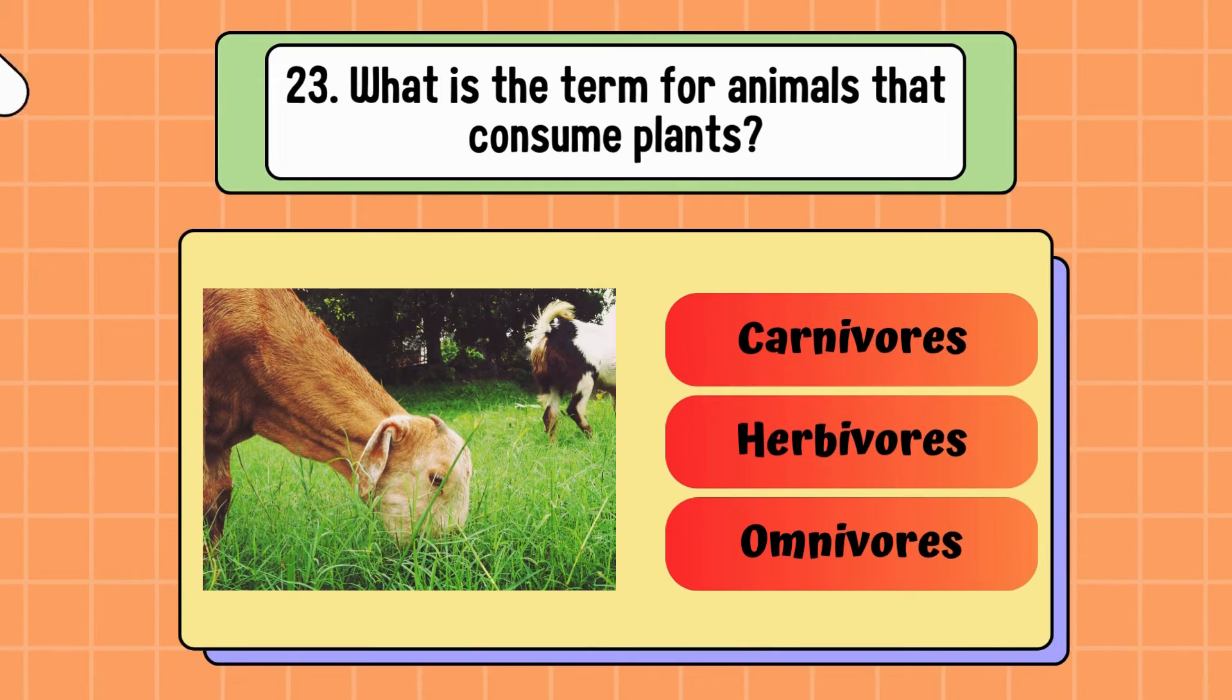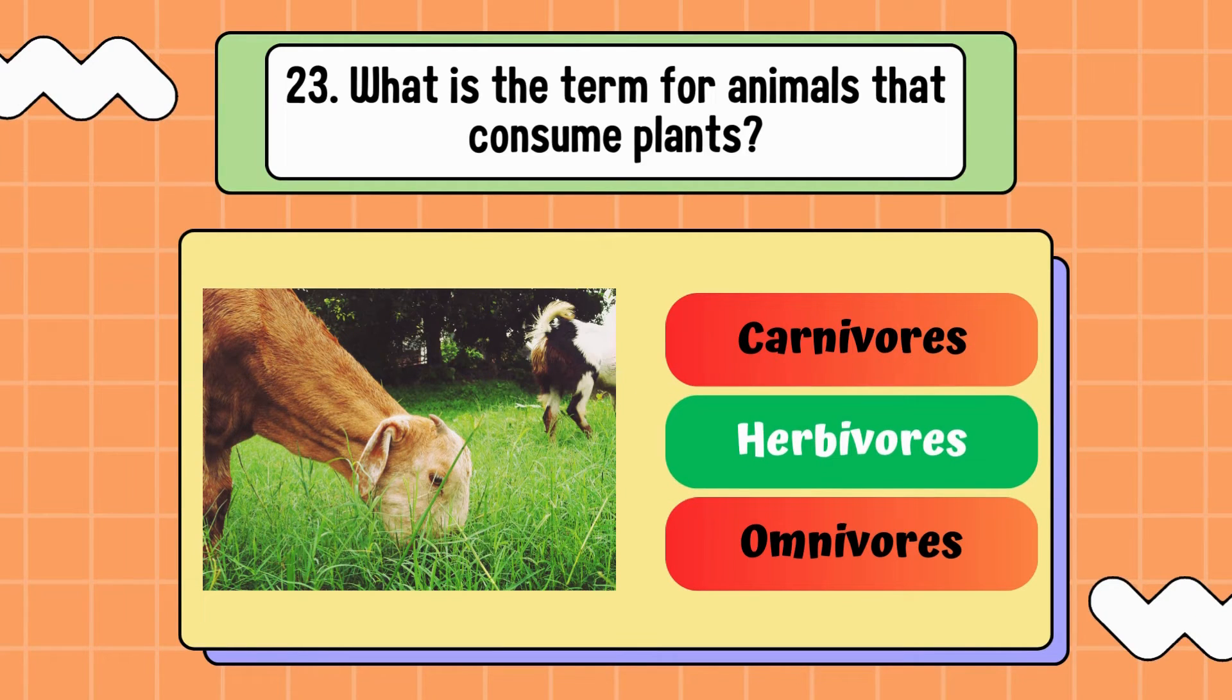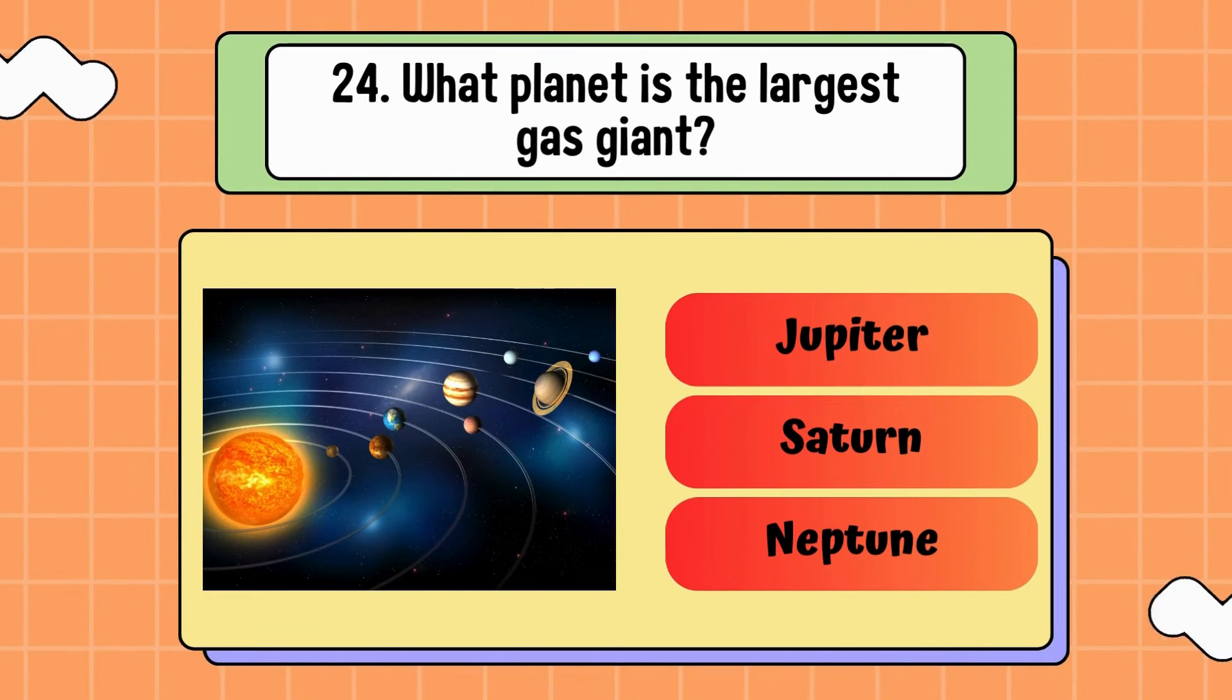What is the term for animals that consume plants? Carnivores, herbivores, or omnivores? Answer is herbivores. What planet is the largest gas giant? Jupiter, Saturn, or Neptune? Correct answer is Jupiter.